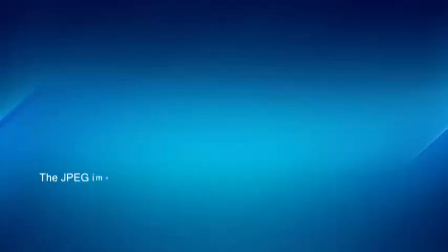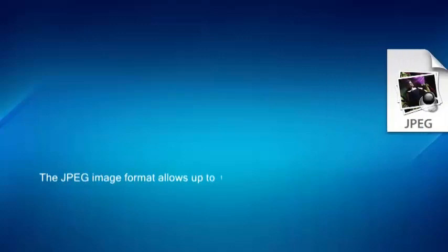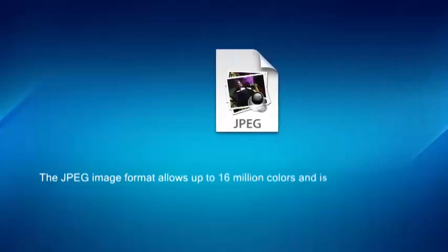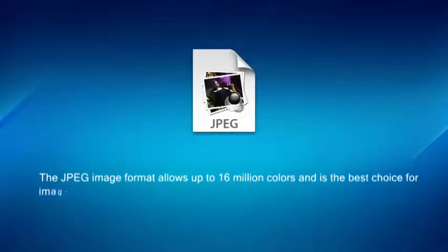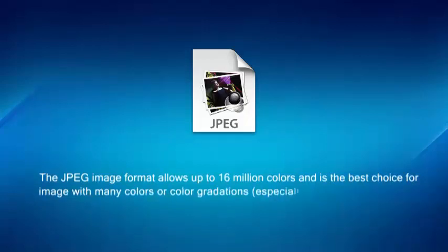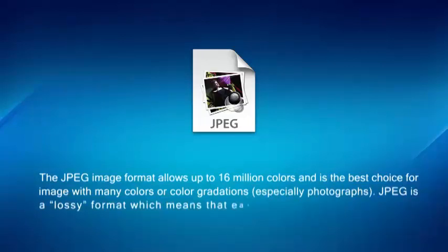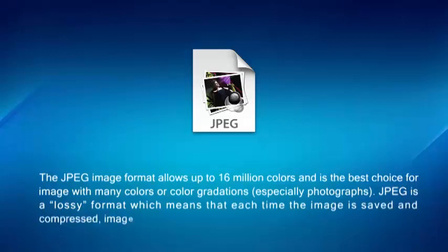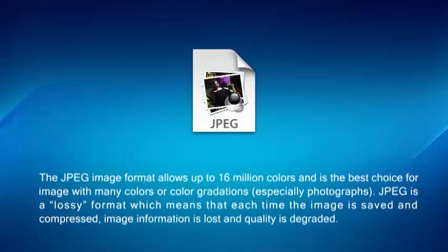The JPEG image format allows up to 16 million colors and is the best choice for images with many colors or color gradations, especially photographs. JPEG is a lossy format, which means that each time the image is saved and compressed, image information is lost and quality is degraded.